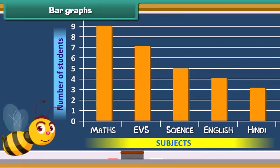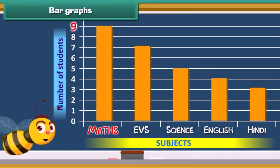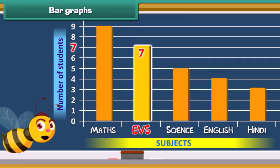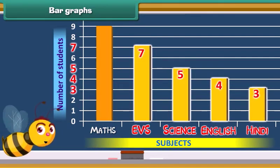In this graph, nine blocks tell us about the number of students who like maths. Similarly, there are seven blocks in EVS, five blocks in science, four blocks in English, and three blocks in Hindi.